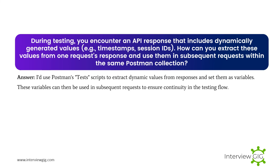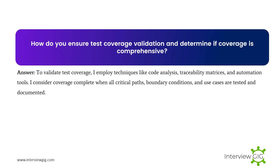You encounter an API response that includes dynamically generated values such as timestamps and session IDs. How can you extract these values from one request's response and use them in subsequent requests within the same Postman collection? I'd use Postman's test scripts to extract dynamic values from responses and set them as variables. These variables can then be used in subsequent requests to ensure continuity in the testing flow.